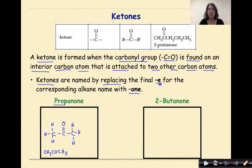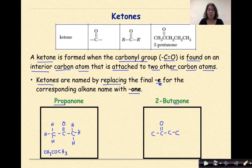Let's do another one: 2-butanone. But means four carbons, with all single bonds between them for -AN, making it 2-butanone. We don't really need the 2, but it's there anyway — as long as the carbonyl is on an interior carbon, it works. I'll put it on carbon two, which gives that carbon all four bonds, then fill in the rest. The condensed structural formula is CH₃COCH₂CH₃, and that is 2-butanone.